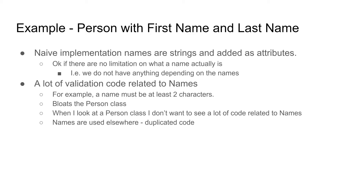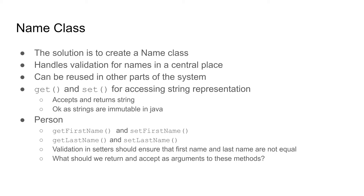The person class becomes bloated, and if these names are also used elsewhere in the system, having them as strings doesn't make sense. We can have a lot of invalid names floating around as arguments, and we need to add this validation all over the place. The solution is to create a Name class to handle validation in a central place. We can then reuse this Name class in other parts of the system and send Name objects instead of name strings.